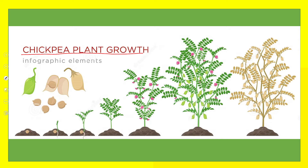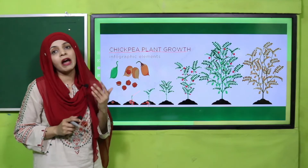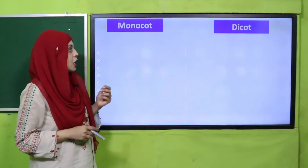In the chickpea seed, when you sow the seed, the cotyledon remains below the soil. The radicle grows into roots, and the epicotyle and plumule grow and develop into the stem and the first leaves of the plant. The cotyledon remains under the soil throughout. So we can see that chickpea, which is a dicot, and maize, which is a monocot, both have hypogeal germination.